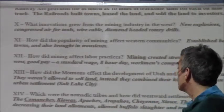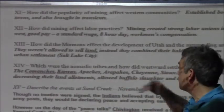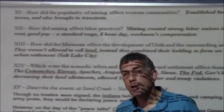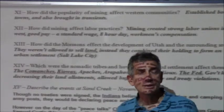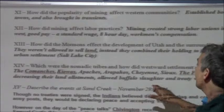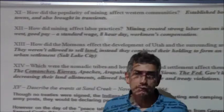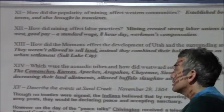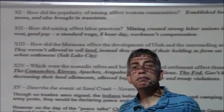Which were the nomadic tribes and how did westward settlement affect them? The Comanches, Apaches, Cheyenne, and Sioux were the nomadic tribes — they followed the food, they followed the buffalo. With barbed wire and the curtailment of free-roaming buffalo, these groups were also prevented from roaming freely. The federal government kept decreasing their land allotments, allowed buffalo slaughter, and violated treaties. Slowly but surely, if they didn't assimilate, they would starve as they got poorer land and their food supply diminished.